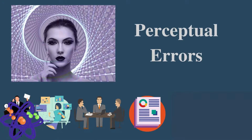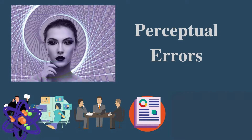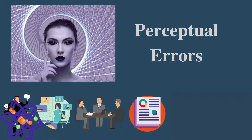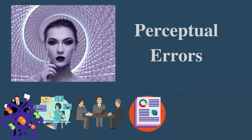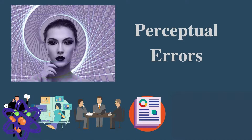Perceptual errors such as selective perception, projection, and the contrast effect occur when there is a deviation from accurate perception. Selective perception happens when an individual selectively interprets what they see based on their interests, background, and experiences, often ignoring information that contradicts their beliefs. Projection involves attributing one's own characteristics to other people, while the contrast effect occurs when we evaluate someone based on comparisons with others rather than objective standards. These errors can distort reality and negatively impact decision making and interpersonal relationships in an organization.